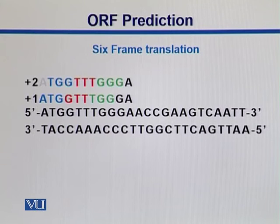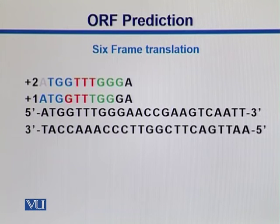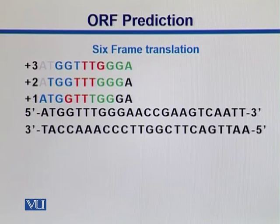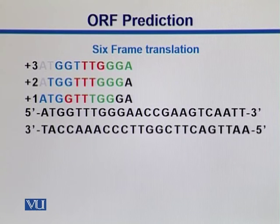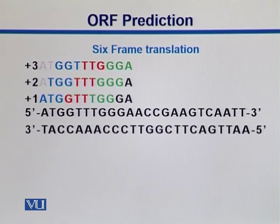In the second possibility, we start from position number two, giving it the label plus two. In a third possibility, we start from position number three. If we were to start again from position number four, it would be no different from position number one. So there are three possibilities for finding reading frames on the top strand.